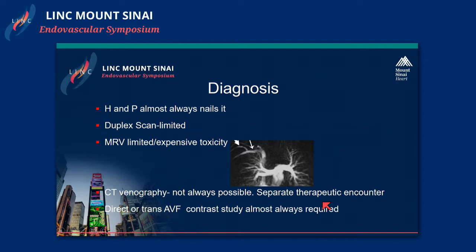Diagnosis is not difficult. This is an extremely common thing that we deal with every day with arteriovenous access. The history and physical almost always nails the diagnosis down, and it's not subtle. The most important thing is for the clinician to pay attention to the history and try to get a good sense as to what has happened in the past, because it usually leads to the diagnosis.